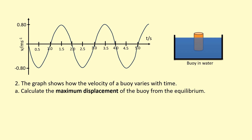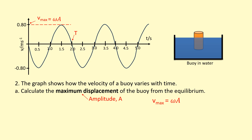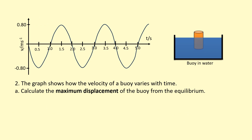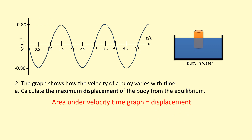A graph shows velocity of a buoy varying with time. We need the maximum displacement — the amplitude. From the graph we read the time period for one complete cycle and the maximum speed v_max = 0.80 m/s. We also know that v_max = ωA. Using ω = 2π/T = 3.14 rad/s, we rearrange to get amplitude A = v_max / ω = 0.80 / 3.14 = 0.25 m. Alternatively, the area under a velocity–time graph equals displacement, so the area above the graph gives the maximum displacement.